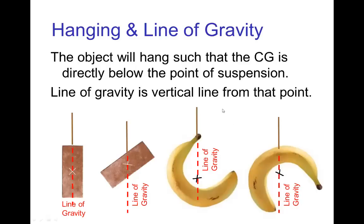Now we also know that when an object is hanging, the center of gravity is somewhere below the point of suspension. So this tells us that the line of gravity must be straight down from the point of suspension. So the line of gravity follows the same line as the rope or string or wire or whatever is holding the object up.